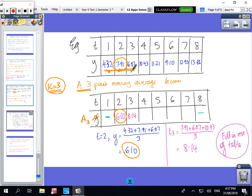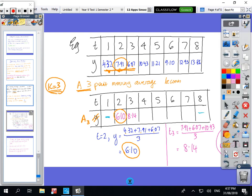To get the next number at three, we look at the average of those three numbers, so 7.91. We go back to the original data, we don't use this new number, we go back to the original data. 7.91, 6.07, 10.43 divided by three, and then that gives us that new number here.